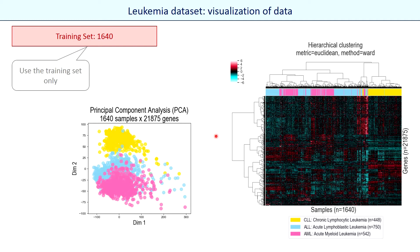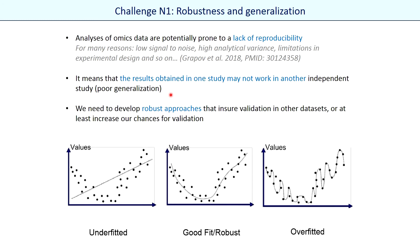Let's first visualize the data with two techniques: a PCA and a clustering. On both figures we can see the same thing. The yellow data points corresponding to chronic lymphocytic leukemia are quite separated from the others, meaning it will be rather simple to identify this class with machine learning techniques. But the two other classes seem to be mixed, so it will probably be a little bit more difficult to separate them.